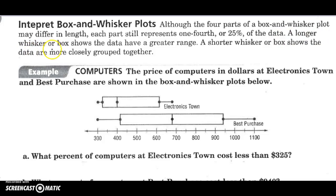A longer whisker or box shows that the data has a greater range. That's what I was trying to show you. It's a bigger difference there. A shorter whisker or box shows that the data is more closely grouped or has a smaller range. Closely grouped means a small range.